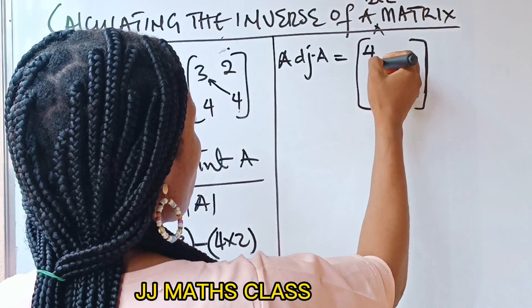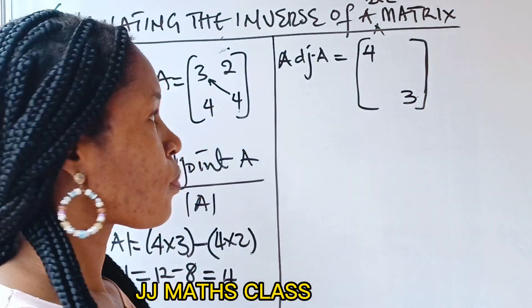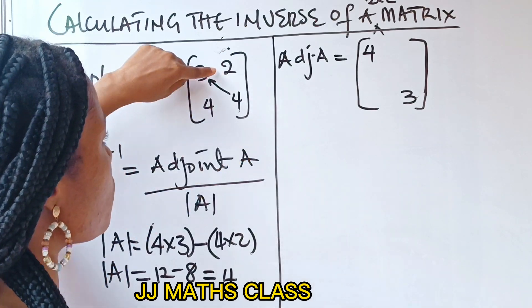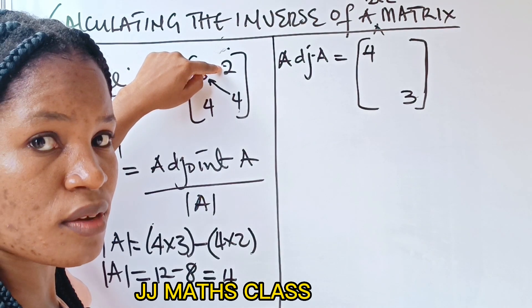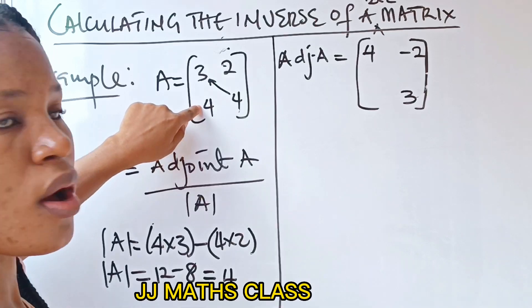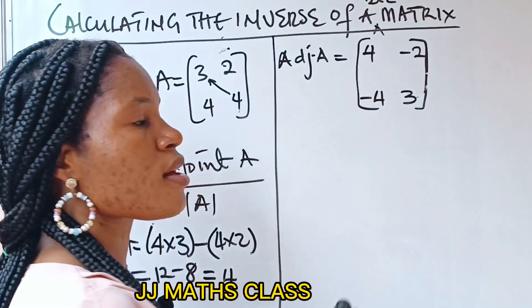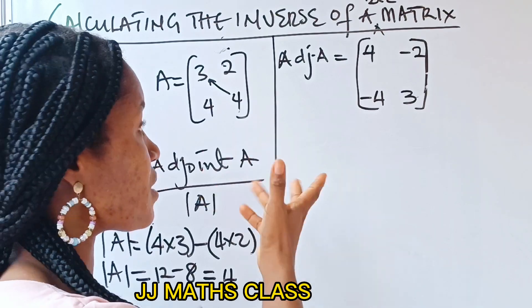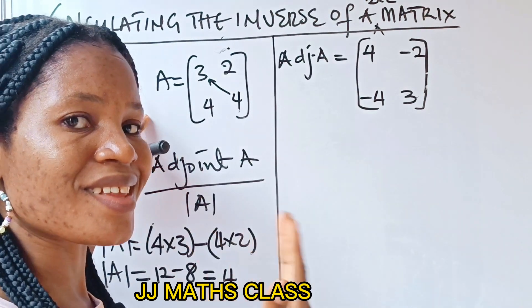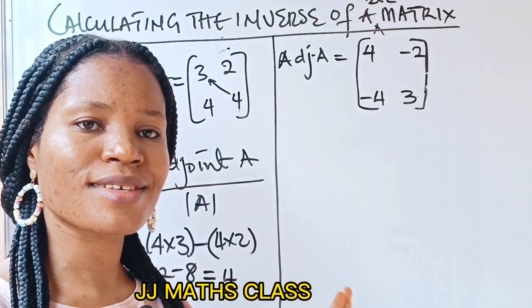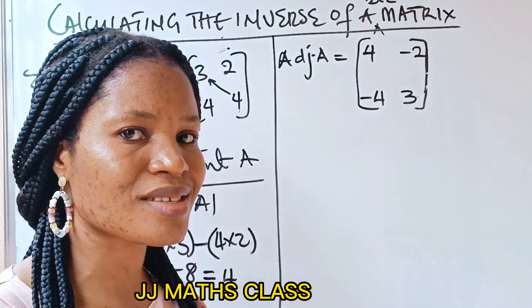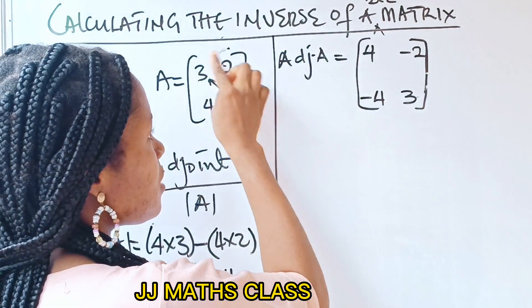So I will write 4 in place of 3 and write 3 in place of 4. Then, for the other elements — 2 and 4 — we are going to change their signs. This 2 is positive, so I will now write negative 2. And because this 4 is positive as well, I will now write negative 4. This is our adjoint of A. We are not doing anything complex — all we did was manipulate these numbers.